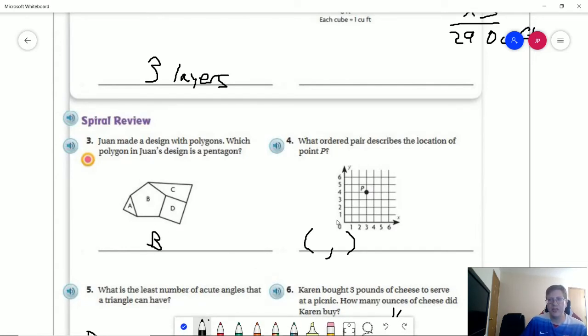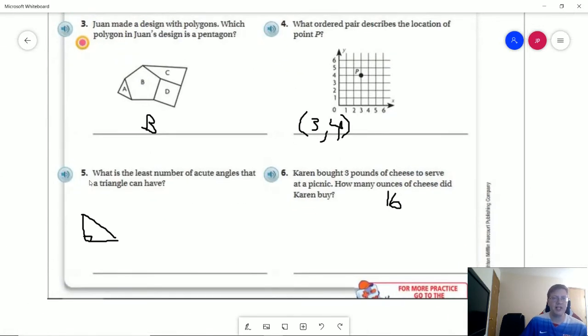For number four, we are working with finding the x value first and writing that down. So it would be positive 3. Then we go up 4 for positive 4. And so this would be the ordered pair that would represent the point P on the coordinate plane.